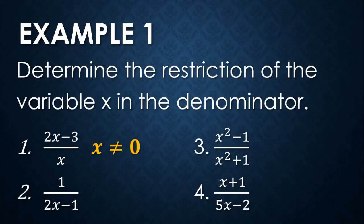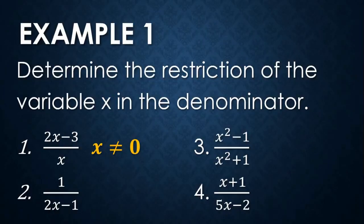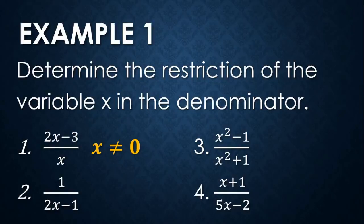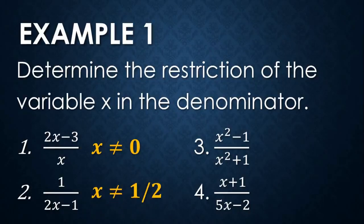For number two, we have 1 over (2x − 1). To find the restriction, we equate 2x − 1 to zero, then transpose negative one to the right and divide both sides by two. x should not be equal to one half. If x equals one half, 2x − 1 equals zero, so that will be the restriction: x ≠ 1/2.